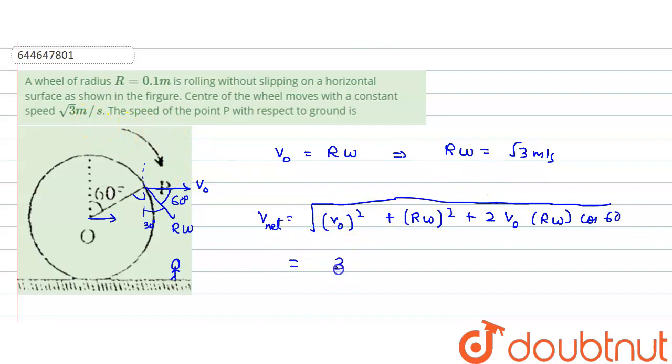2 into root 3 multiplied by root 3 into cos 60 is 1 by 2, and we need to take the square root of this quantity.